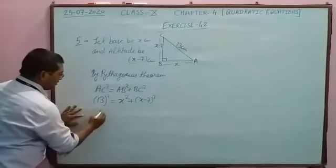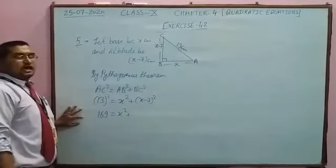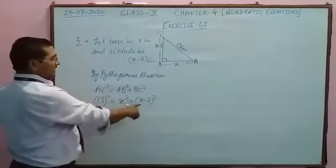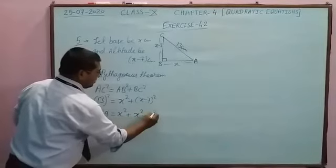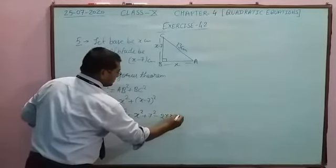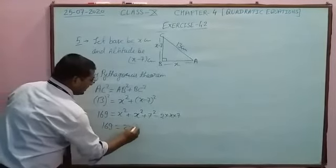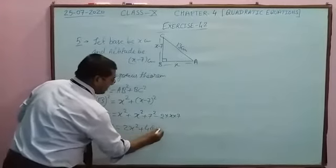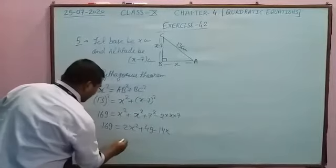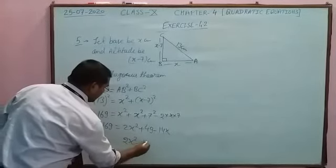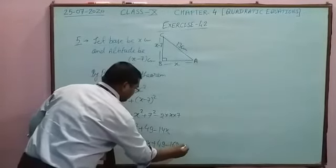Substituting: 13² = x² + (x−7)². So 169 = x² + x² − 14x + 49, which gives 169 = 2x² − 14x + 49. Rearranging: 2x² − 14x + 49 − 169 = 0.